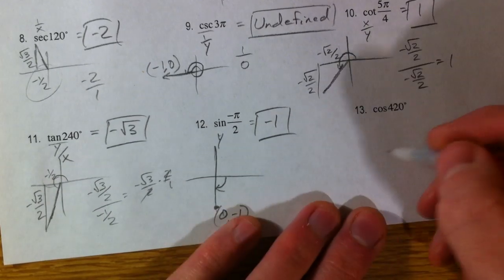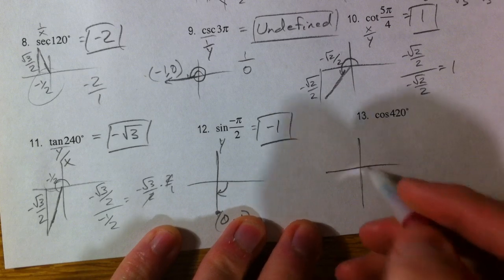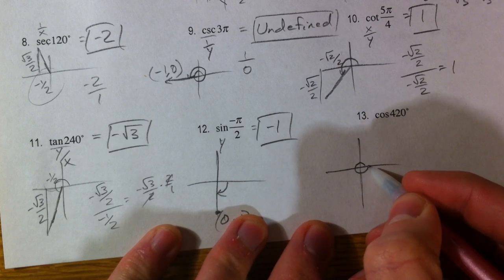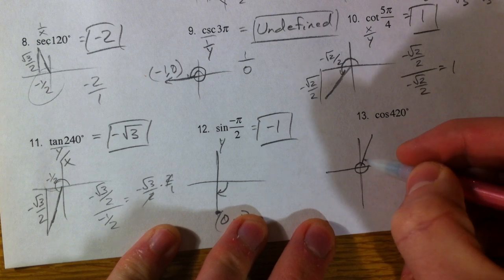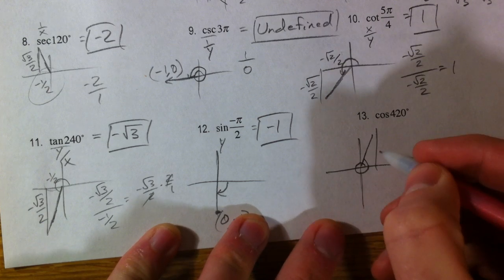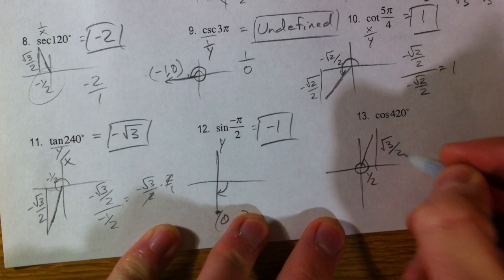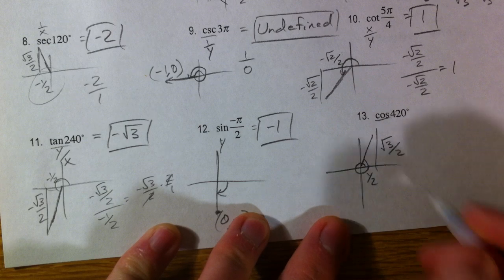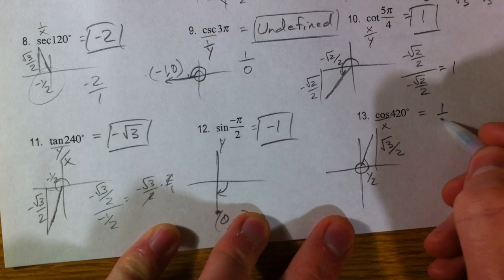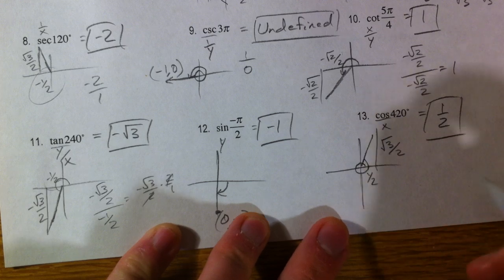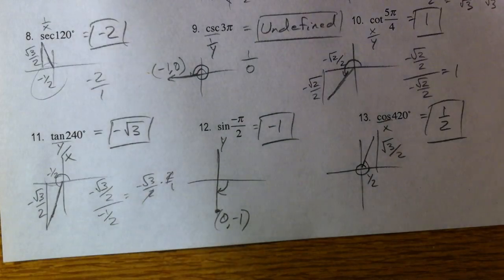And, cosine of 420. So, over 360. We've gone past it. It doesn't make that much of a difference, but we've gone 60 degrees past it. And so, we're up here. Again, short side is 1 half. Long side is root 3 over 2. Cosine, we're looking for the x. And so, that's the 1 half. And there you have it. Bunch of simplified radical forms. And we'll keep going.